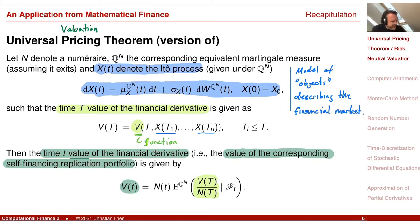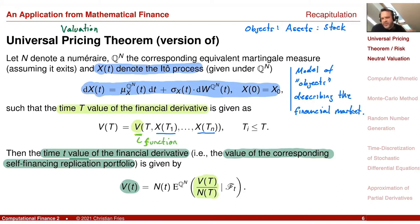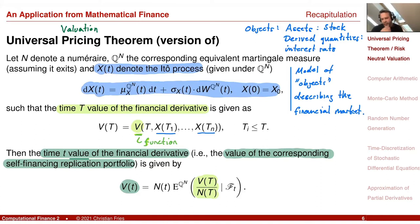Why do I use the complicated word 'objects' here? An example could be an asset — the value of an asset, for example a stock. It could also be derived quantities, for example interest rates, which also describe the market. So when we do interest rate modeling, maybe the X is not the value of some traded asset — it is the value of an interest rate, something that describes the state of the market, which is in the end associated with some traded asset.